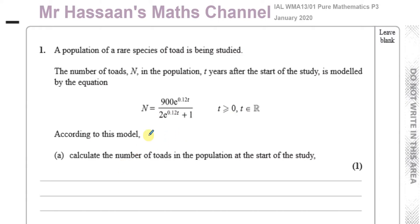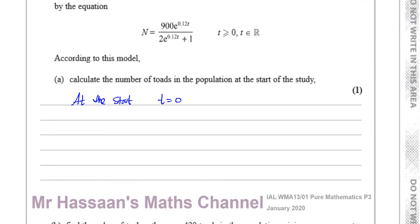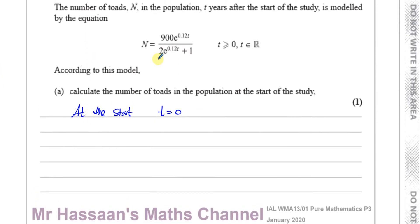According to this model, calculate the number of toads in the population at the start of the study. So we should know that at the start of the study, that means when time equals 0. Because t is defined as the number of years after the start of the study. So at the start t is 0.